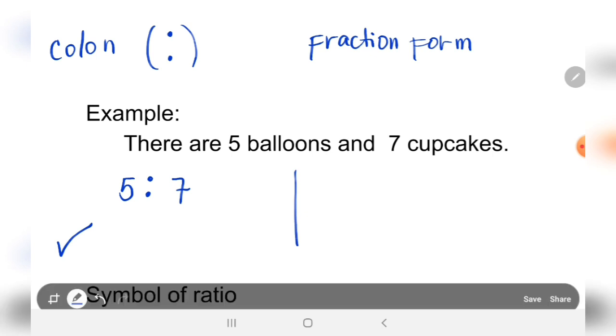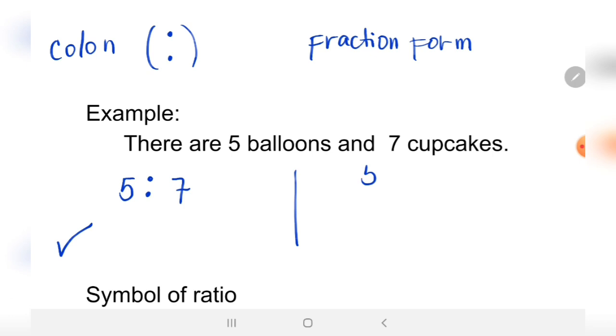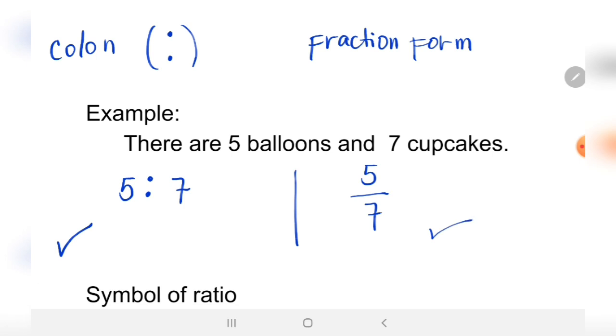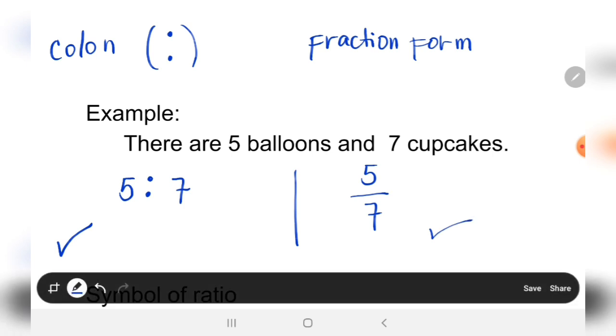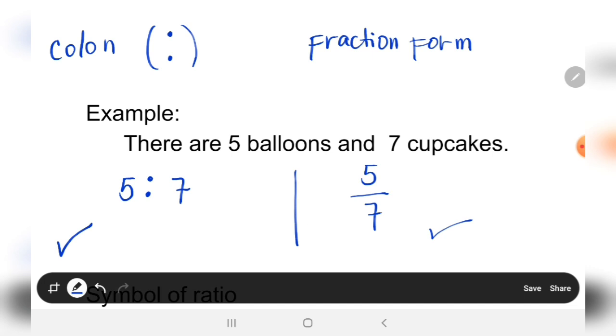The other form is the fraction form, and that is how many balloons - that is five - over seven cupcakes. And that's it. So remember, in writing ratio there are two ways: using the colon sign or in fraction form. Either of these are correct.